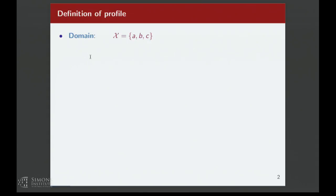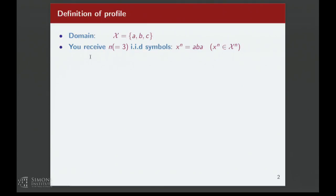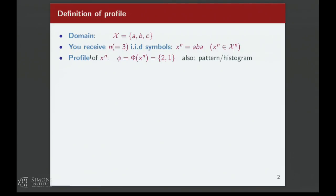Now let me tell you about the other notion in the title: profile maximum likelihood. Consider a simple setting — a domain of size 3 with elements A, B, and C. Say we pick three IID samples and get A, then B, then A. The profile of this sample is just a vector of frequencies, sorted so the highest numbers appear first. So the profile of sequence A, B, A is 2, 1. This concept is also called a pattern or histogram.